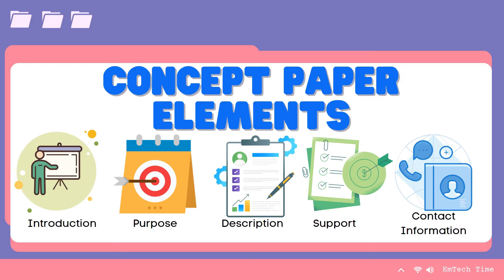Next is Description — this includes all the necessary information about the project. It involves the websites or pages you are going to produce and the purpose of each and how they work in unison. Next, we have Support — this contains the budget needed for the project, though some concept papers do not specify any amount requested from the sponsors.